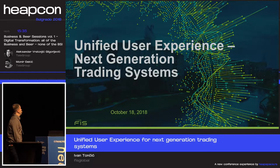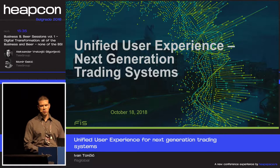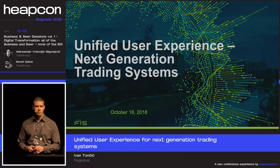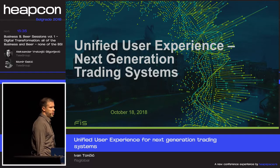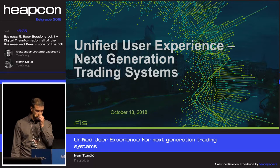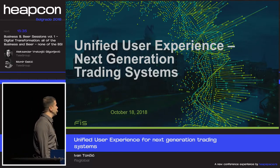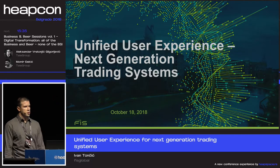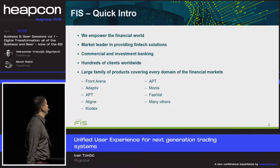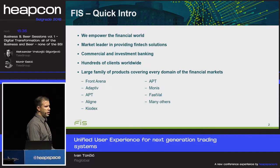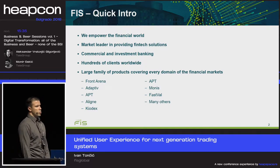Hi everyone and welcome. My name is Ivan Tončić. I am a software developer in the research and development team called Strategy Enablement, based out of Belgrade. In FIS we are part of a larger group called Cross Asset Trading and Risk. The best thing I like about my job is being able to go through existing solutions and explore new technologies. Let me say a few words about FIS — we empower the financial world.